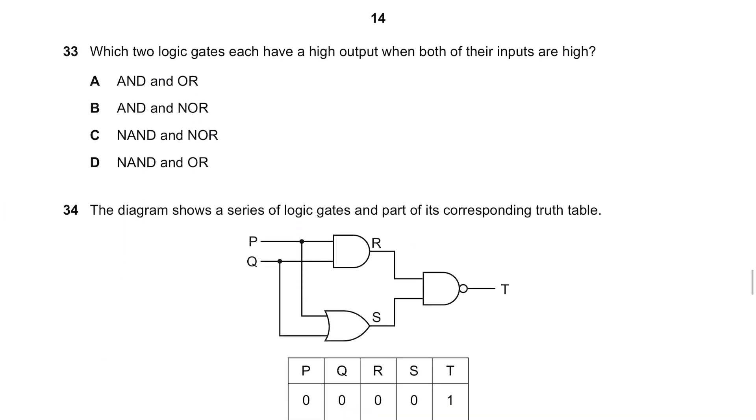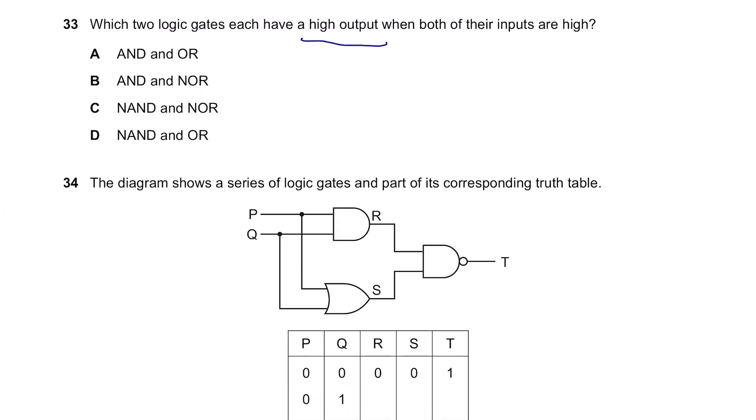Question 33. Which two logic gates each have a high output when both of their inputs are high? High output is basically 1 and inputs are high when both of the inputs are 1 and 1. Well, for this, AND gate will work because it requires both the inputs to be high to have a high output. AND OR gate will work as well because for this, it can either be 1 0 or 1 1 to have 1 as its output. So, the answer is A.